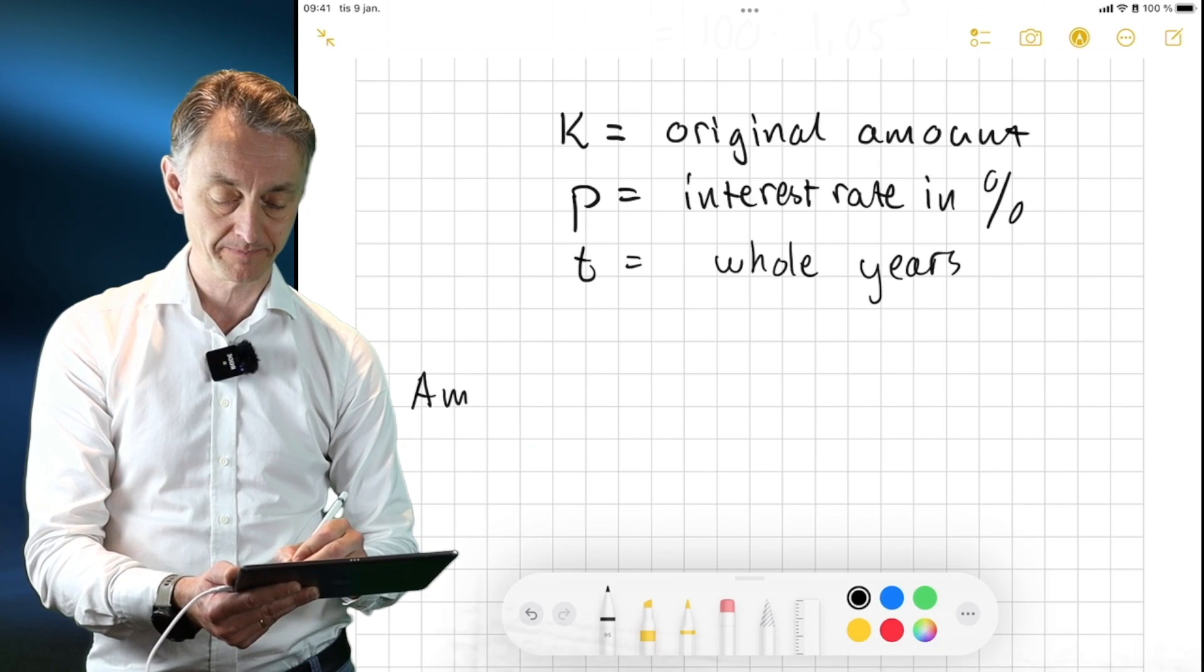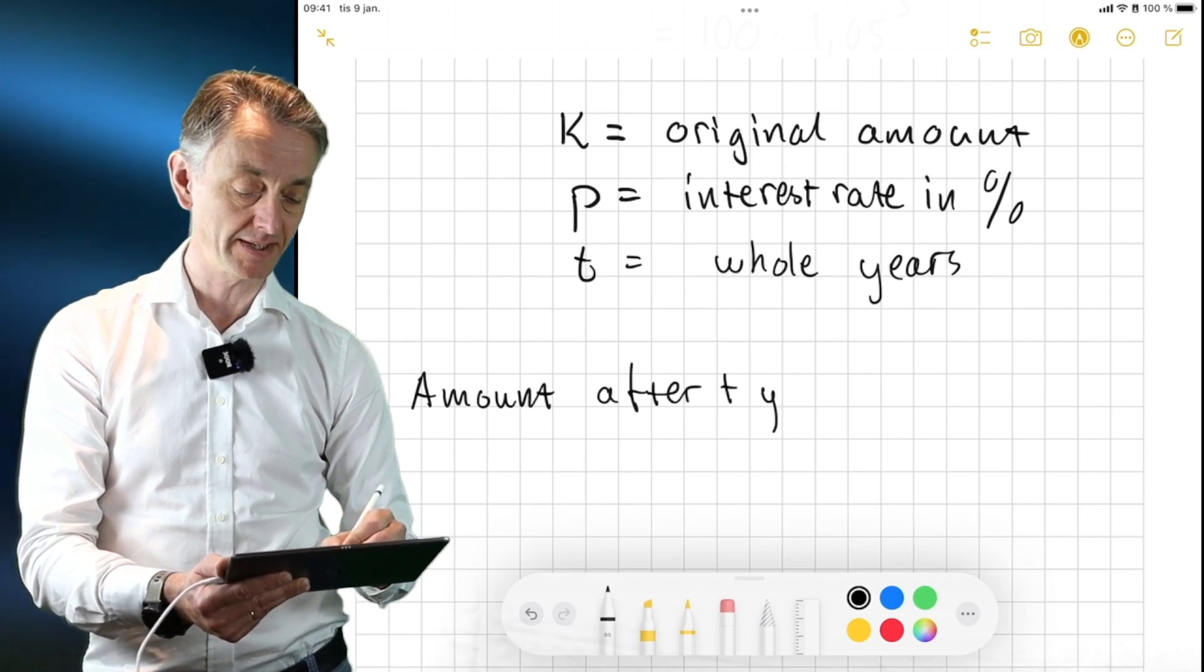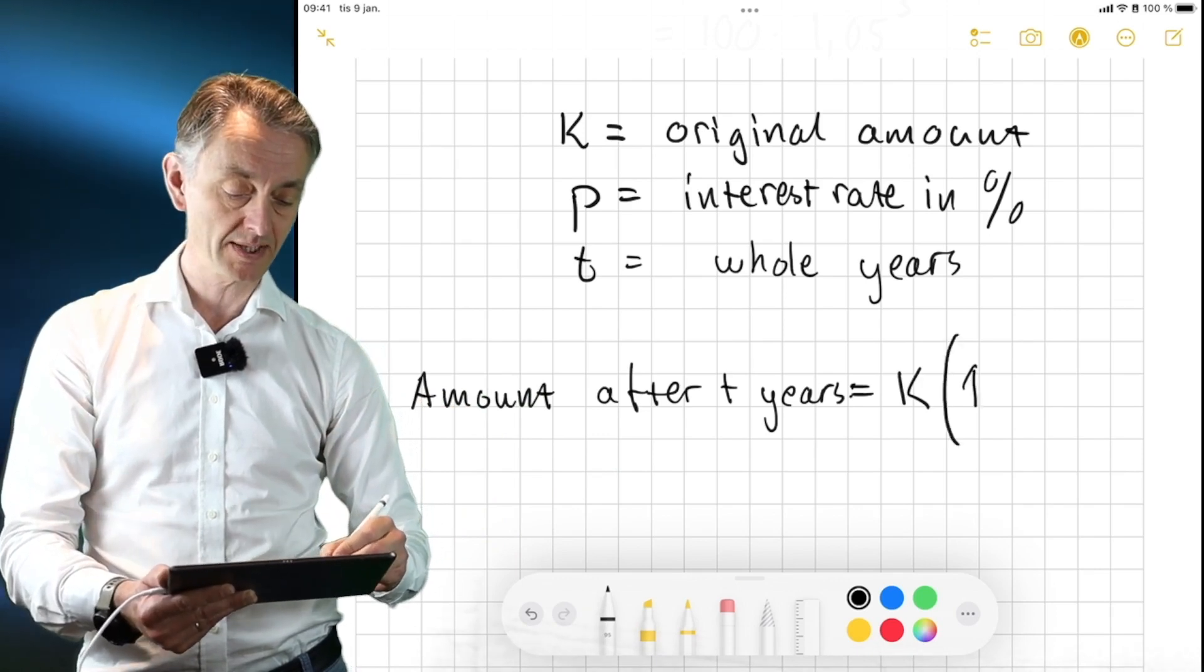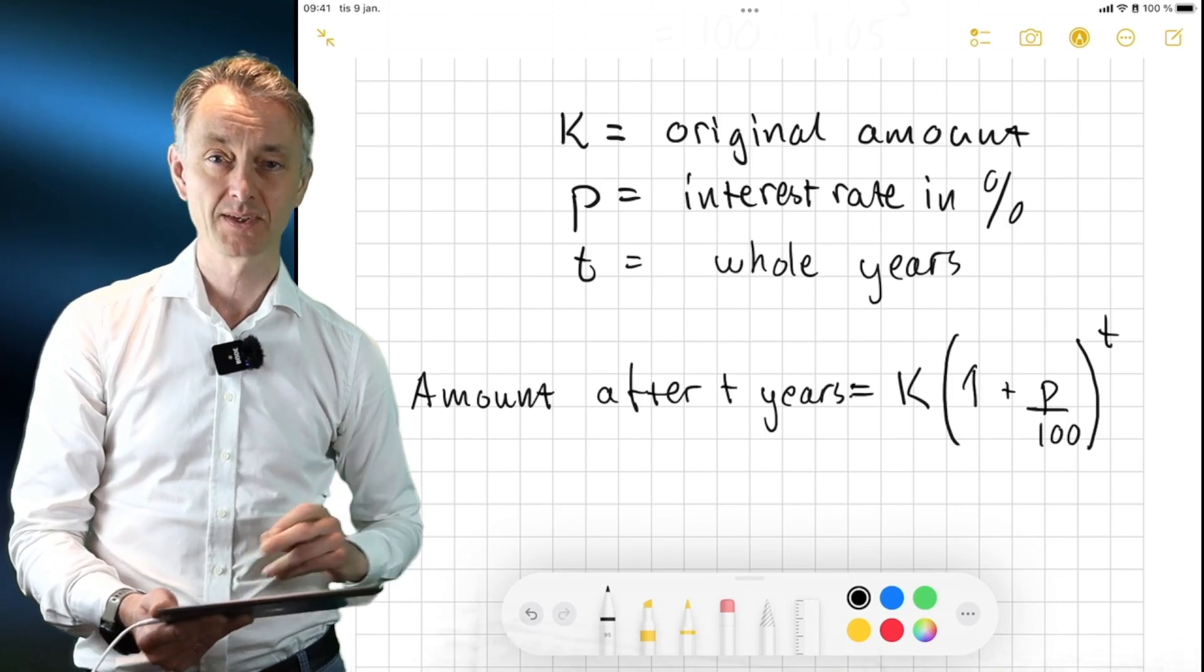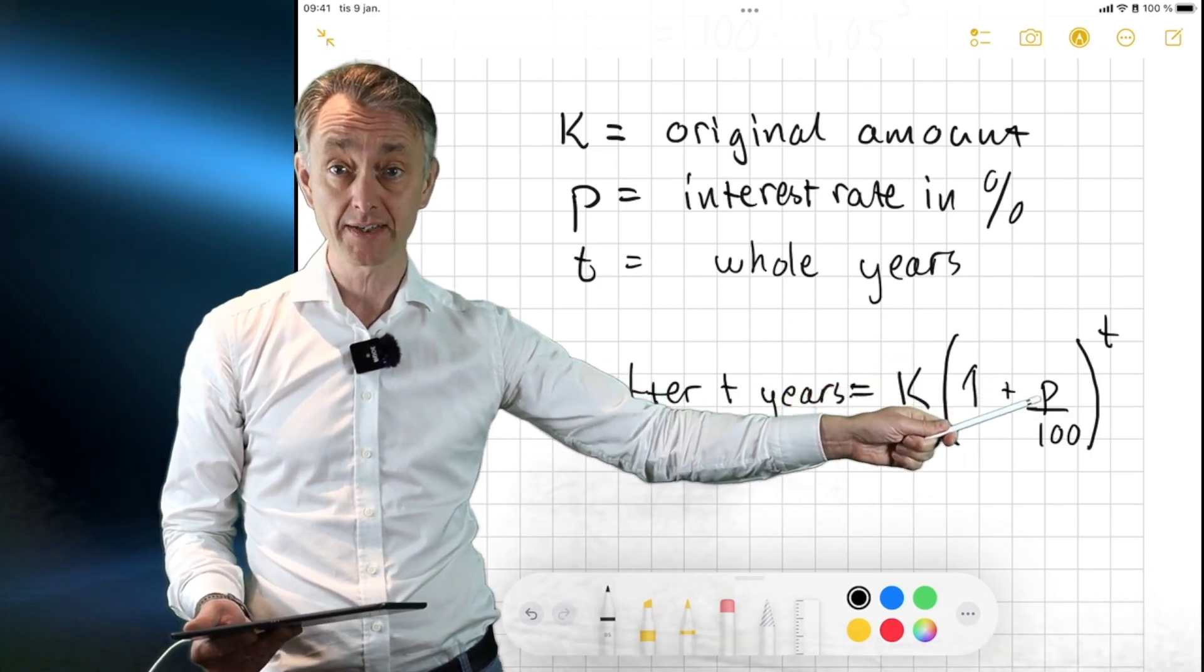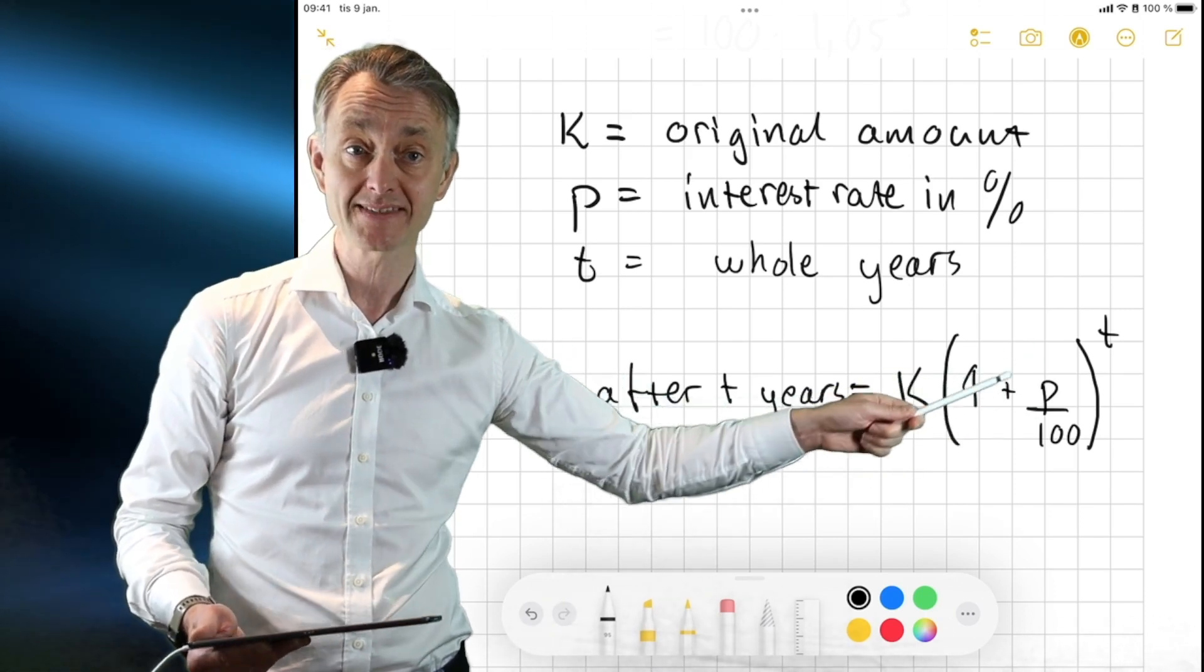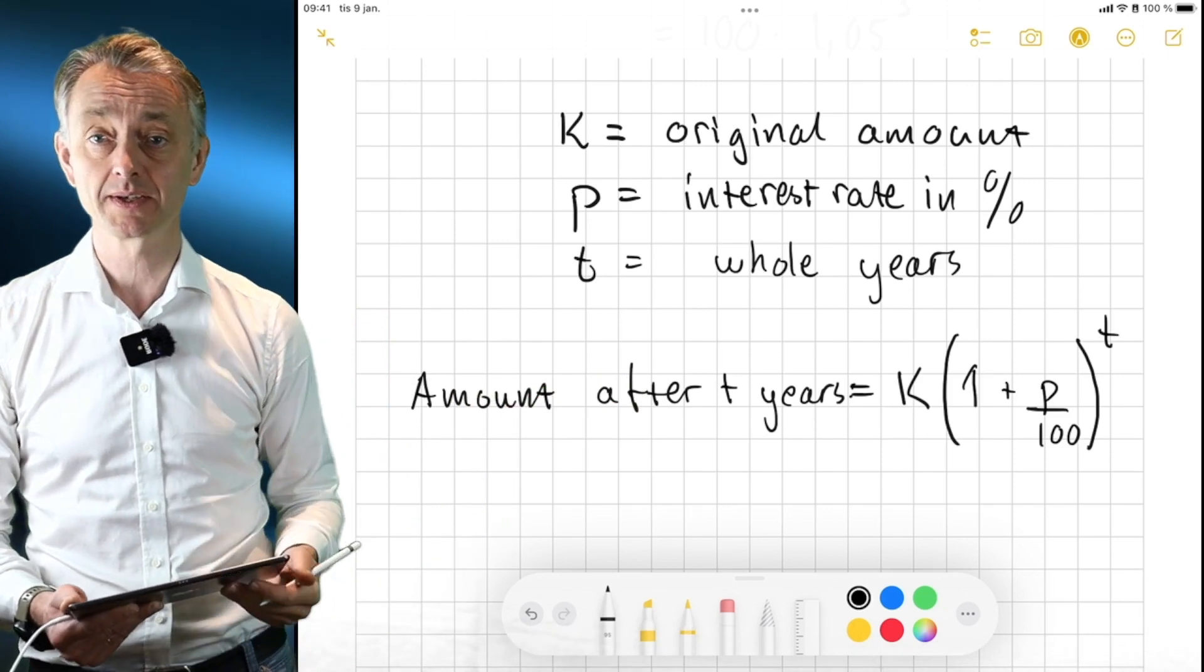And so there's a general formula we can use for this and it is the following. So the amount you will have in the bank, amount after T years, is that will be equal to K. That's the starting amount, right? And then we can do this one plus P divided by 100 to the power of T. So going back to my example, the K was 100, right? Then the P was 5 and then divided by 100. So you can see that 1 plus 0.05 is 1.05. That's the growth factor, the base, and the amount of years is T. So you can see that this is a very useful formula to know when you need to compute compound interest.